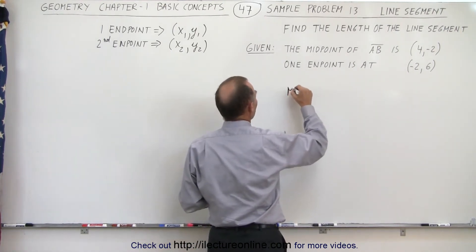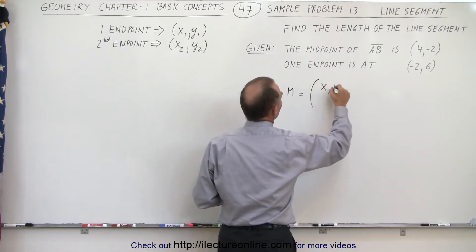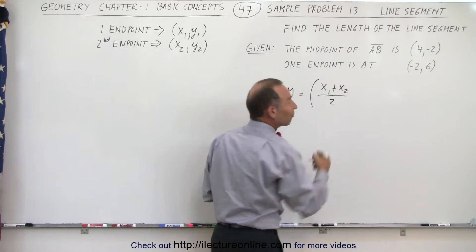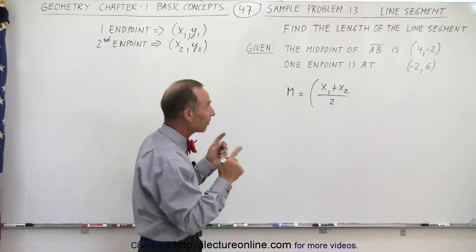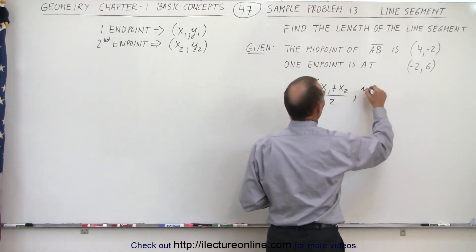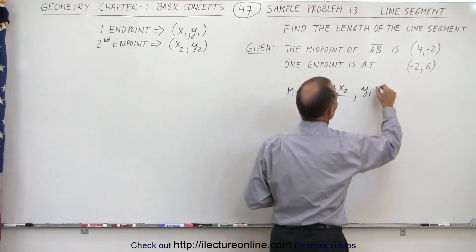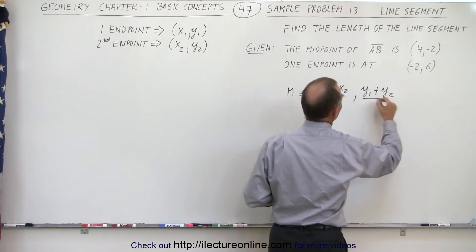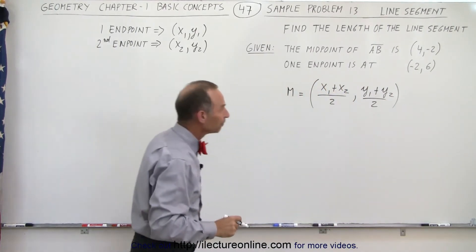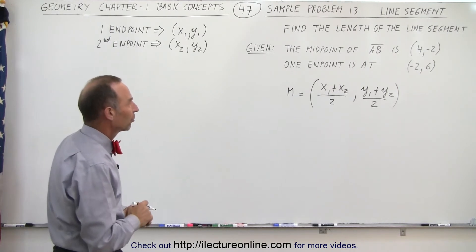We can say that the midpoint is equal to (x1 + x2) divided by 2, which is the average value of the two x-coordinates of the two endpoints, and (y1 + y2) divided by 2, which is the average value of the y-coordinates of the two endpoints.